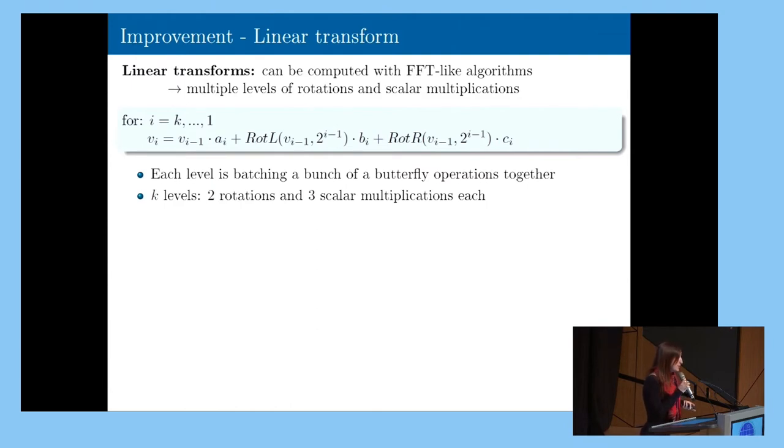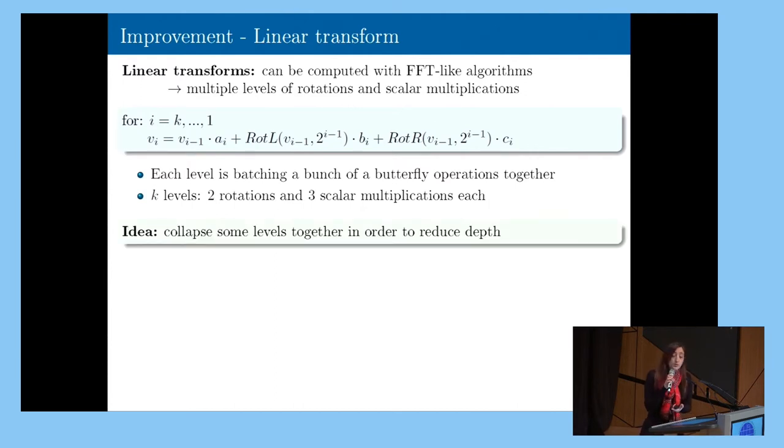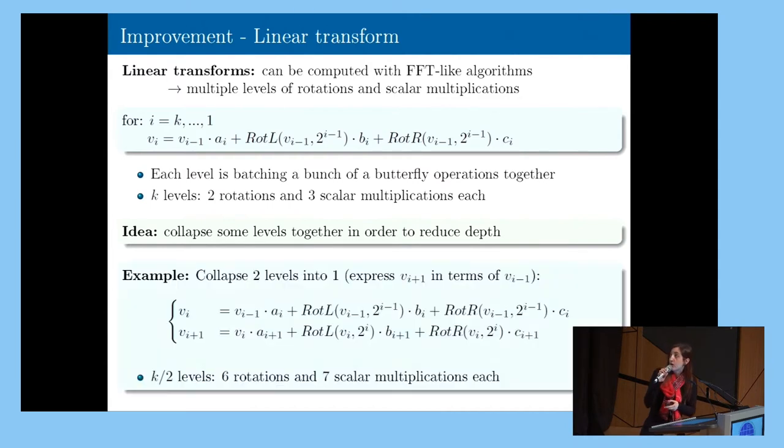So levels are very important in homomorphic encryption. If we can consume less levels, it will be better because those levels will be used later on proper homomorphic operations. So an easy idea to reduce these levels is to collapse together some of those levels. As instance, in my example, if I collapse together two levels into one, I will take v_{i+1} and v_i, and I will express v_{i+1} in terms of v_{i-1}.